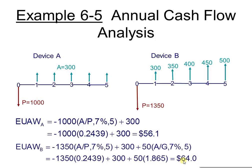Which device would we prefer? The criterion is to maximize annual worth since both inputs and outputs differ — this is the general situation. Device B has the larger worth at $64.00 compared to device A's $56.10. So we select device B.